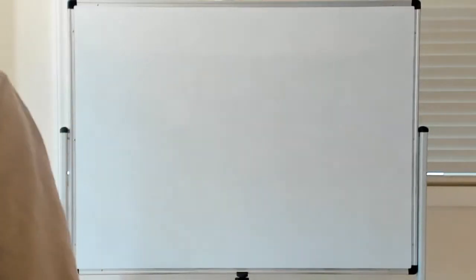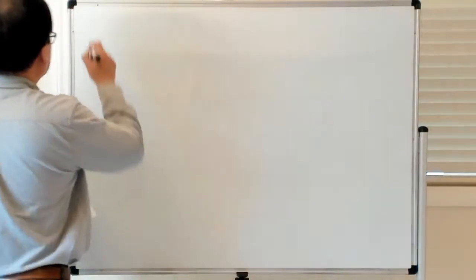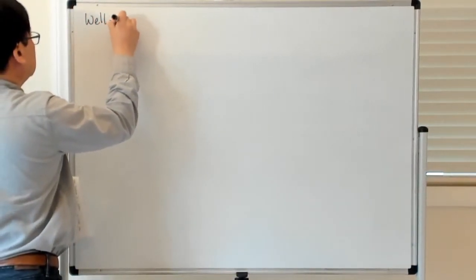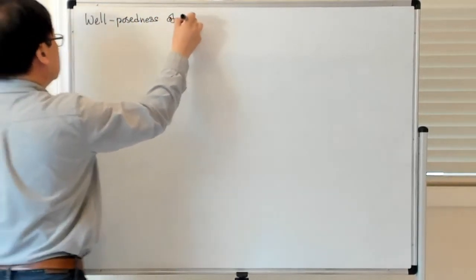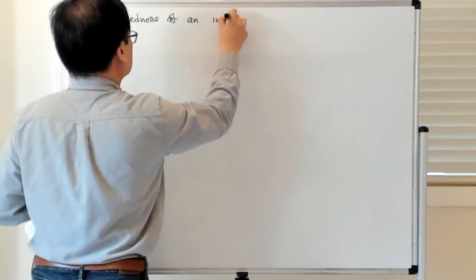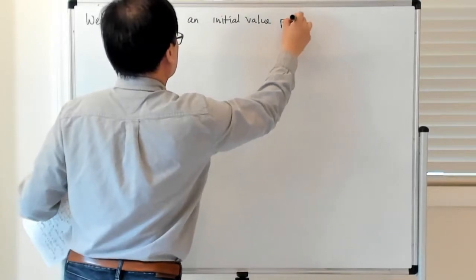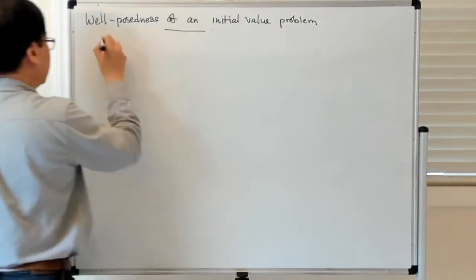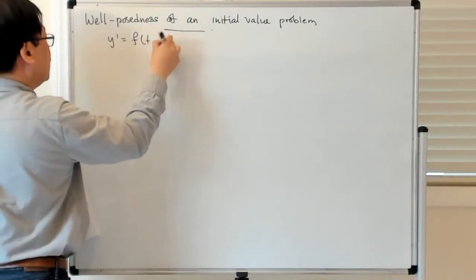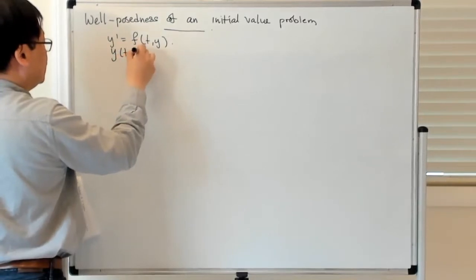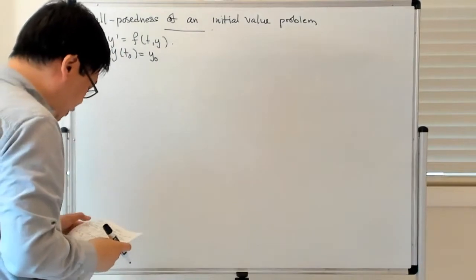Alright, so now we begin to introduce this idea of well-posedness of an initial value problem. We're looking at the case y' = f(t, y) with initial data y(t₀) = y₀. This is the setting we're looking at.